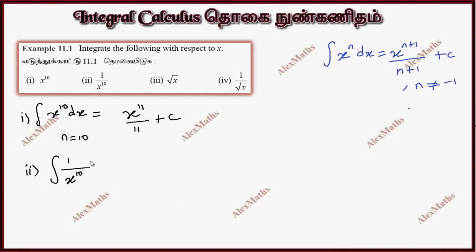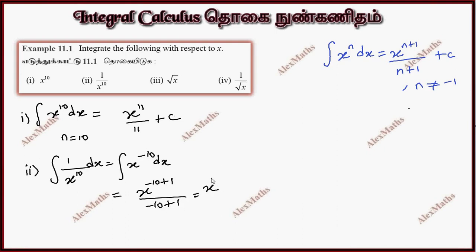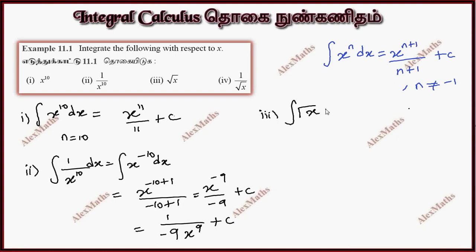Subdivision 2: integration of 1 by x power 10 dx. We rewrite this as x power minus 10. Applying the formula: x power minus 10 plus 1, divided by minus 10 plus 1.